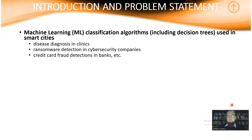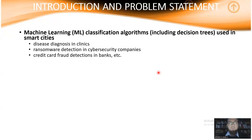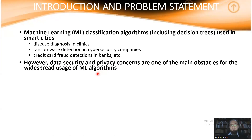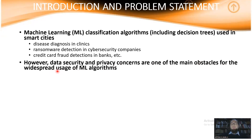The scope of the problem: we have a lot of machine learning classification algorithms, including decision trees, which are used in a variety of scenarios, such as disease diagnosis in clinics, ransomware detection in cybersecurity companies, credit card fraud detection in banks, and so on. However, security and privacy concerns regulated by laws and other regulations are a main obstacle for the widespread usage of such machine learning algorithms.